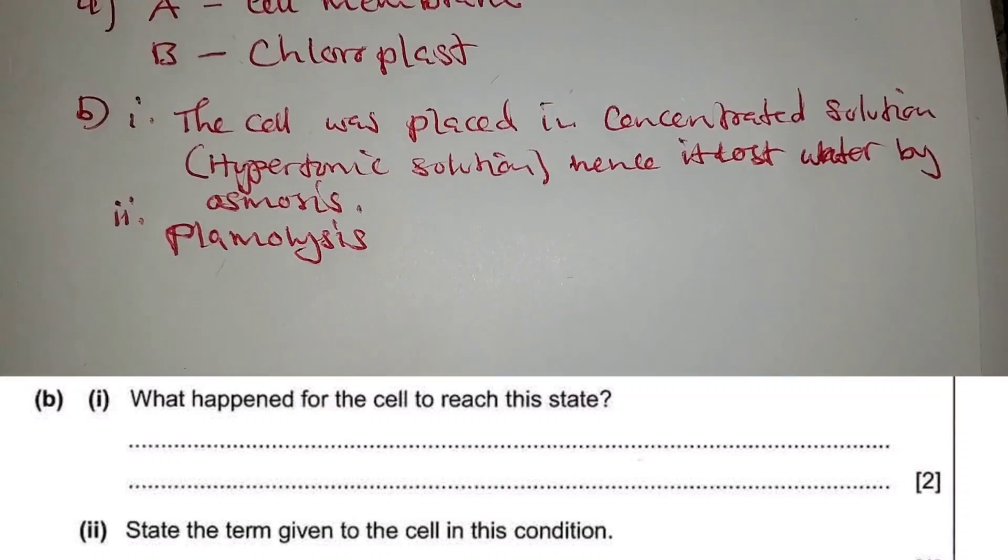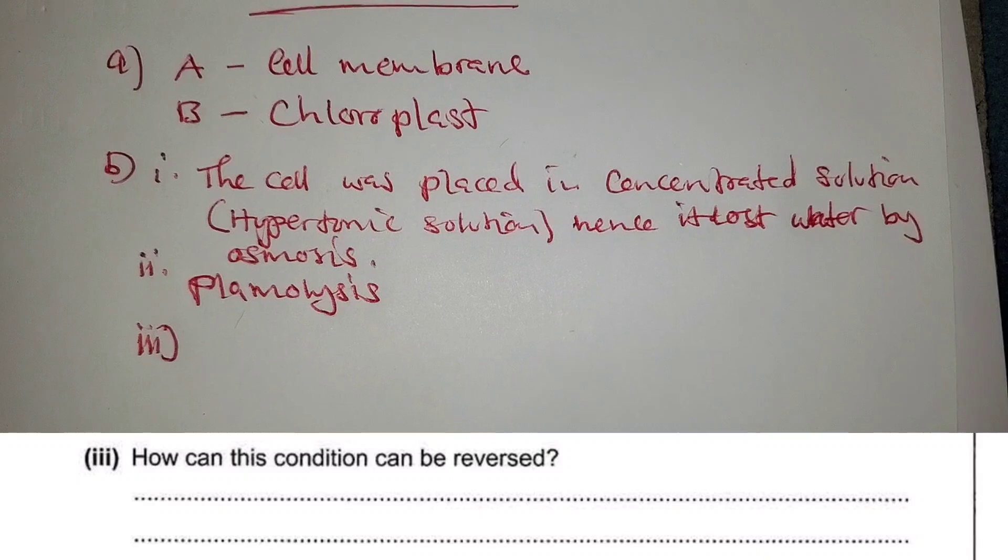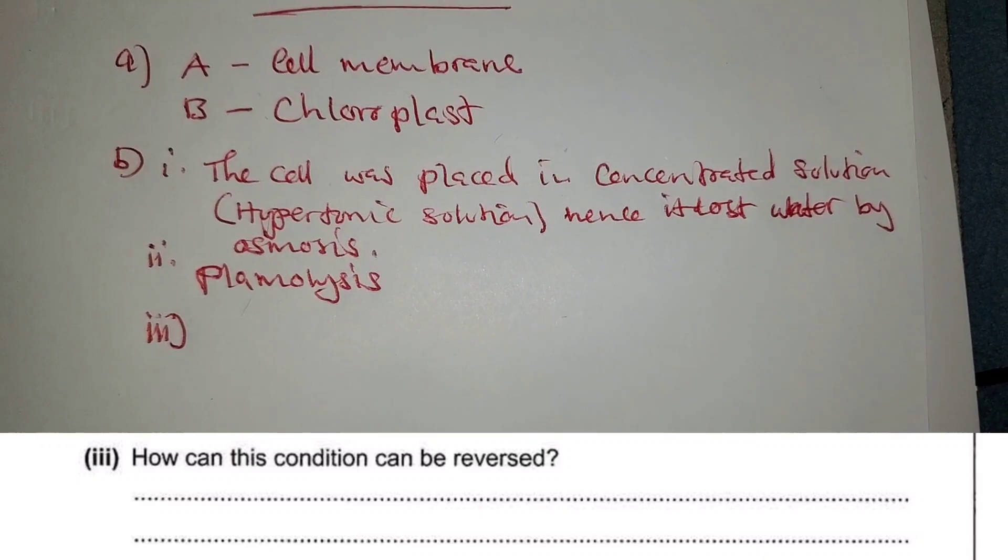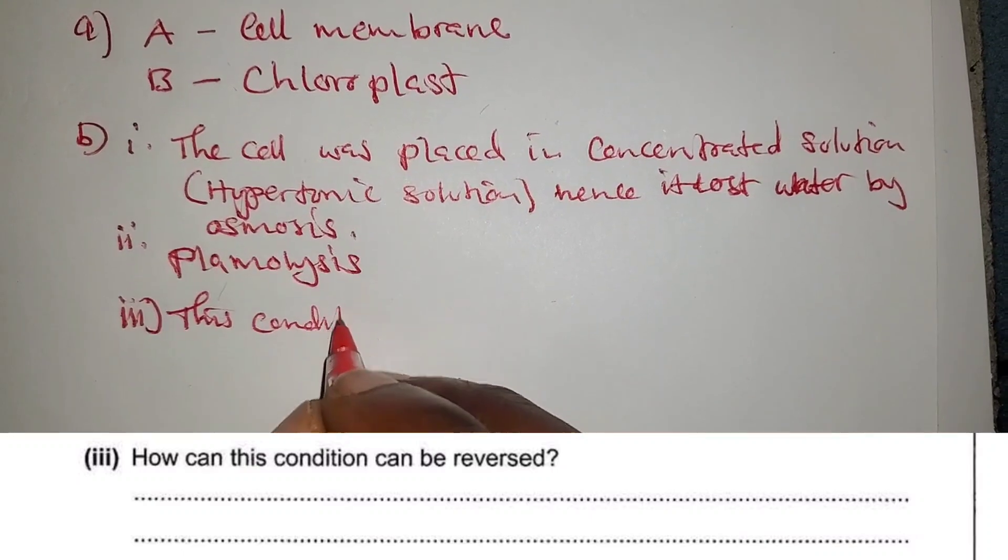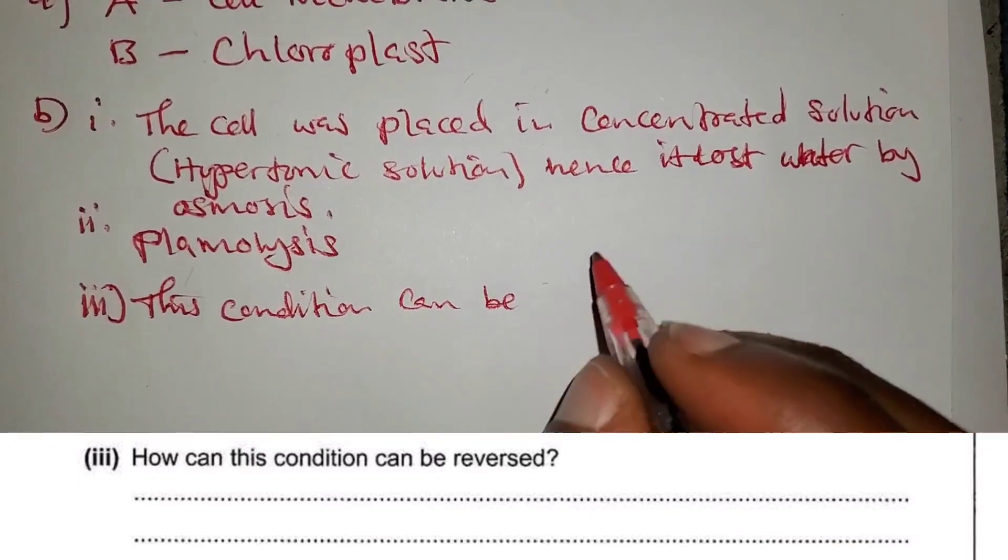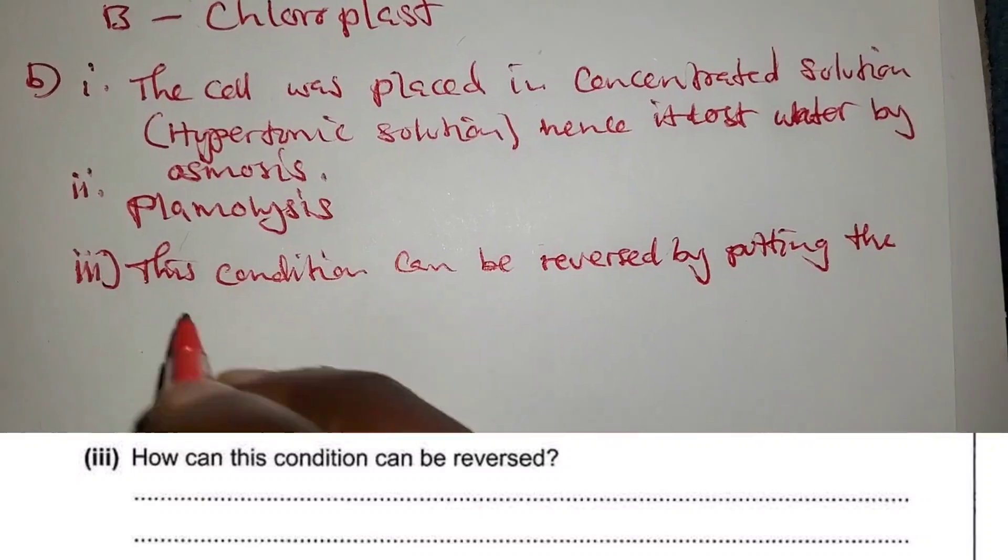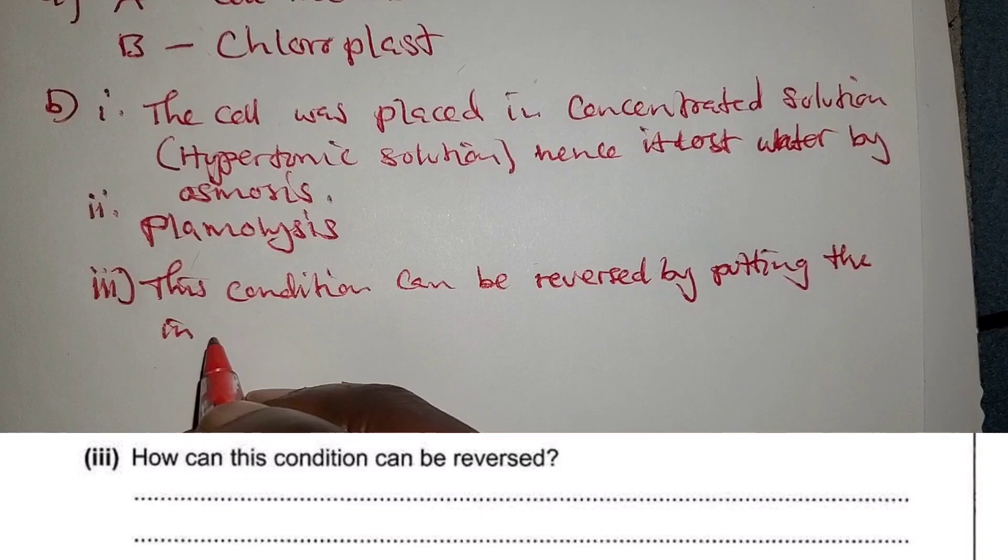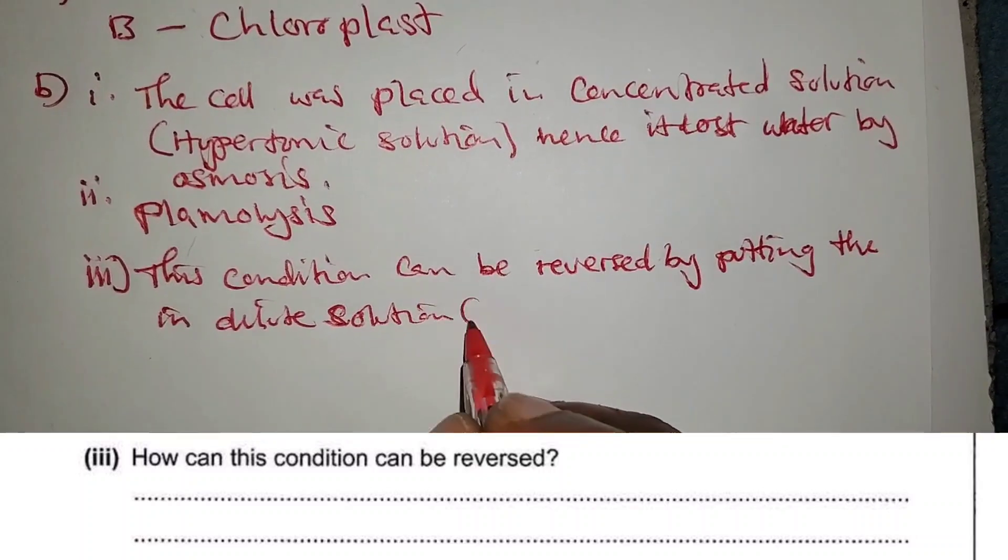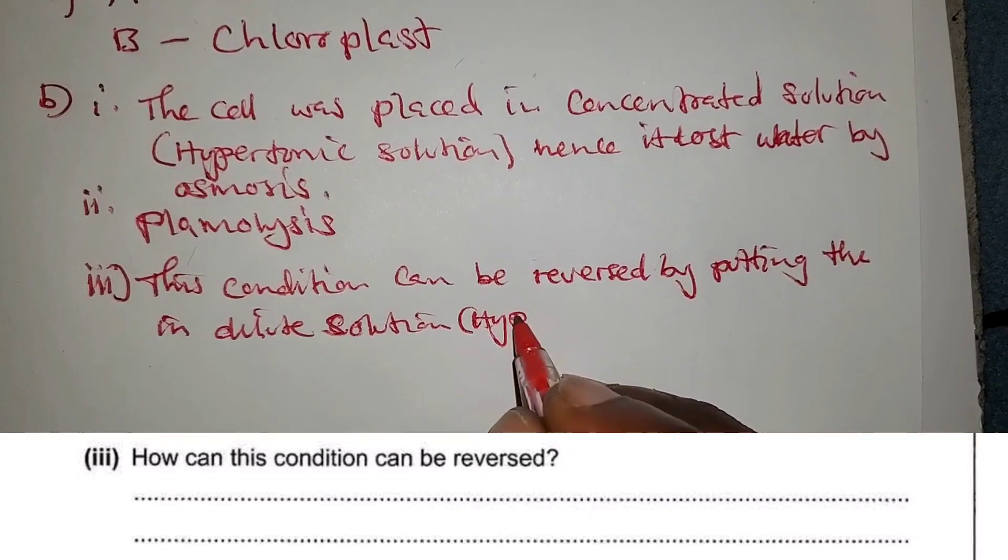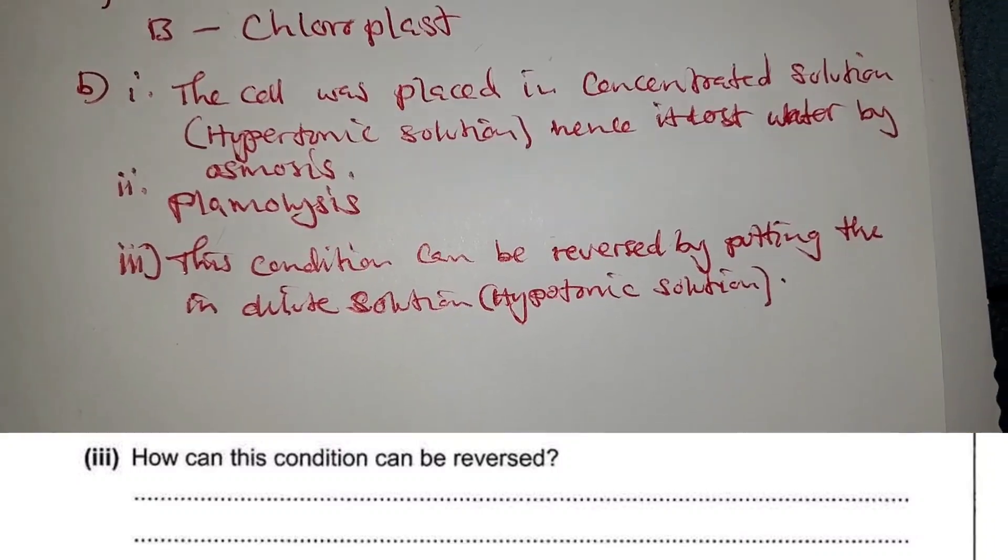Next question is B(iii), asking how can this condition be reversed. This condition can be reversed by putting the cell in dilute solution. This dilute solution is usually hypotonic solution, such as pure water.